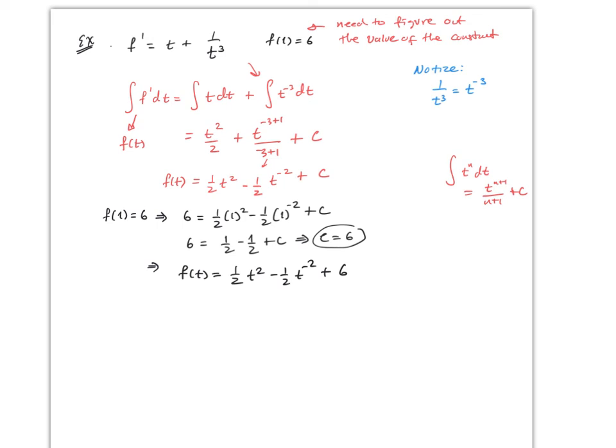You should verify this by taking the derivative. The derivative of (1/2)t² is t; the 2s cancel. For −(1/2)t^(−2), the −2 comes down: −2·(−1/2)·t^(−3) = t^(−3). The derivative of 6 is 0. So the derivative gives exactly t + t^(−3), which confirms this is without a doubt the correct anti-derivative.